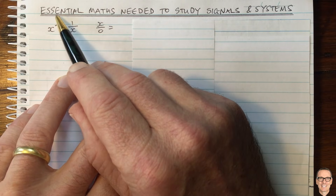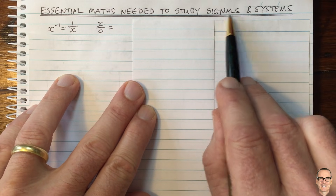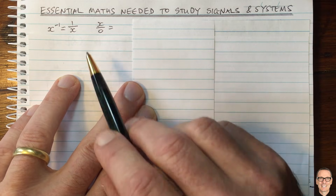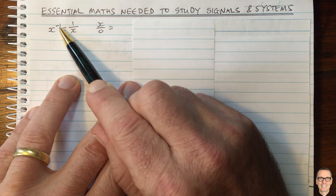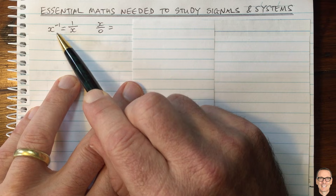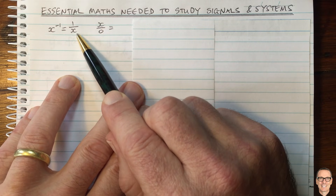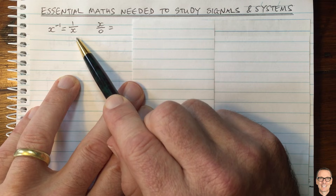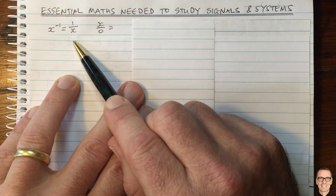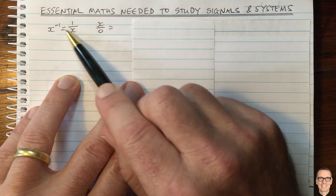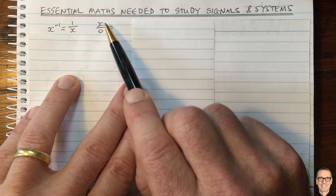This video is going to summarize the essential maths needed when you start studying signals and systems. Let's start with some important notation. We have x to the minus 1, and it's important to remember that can also be written as 1 divided by x. That's fairly basic, and we're going to build up to more complicated maths as we go, but even things like this are important to remind yourself of.